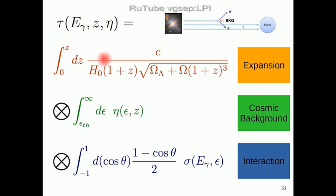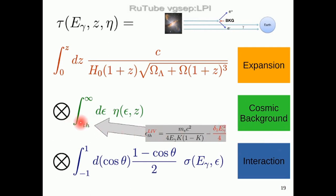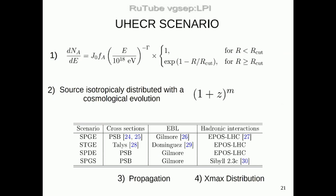Once this is done, you can calculate the propagation either analytically for the simplest case, or using a Monte Carlo simulation for the most complex one, giving you how transparent the universe is to a given interaction. Another example: how Lorentz invariance violation changes the pair production — there is an energy threshold, and when we include the violation for the first order, we gain an extra term inside the integral over the cosmic background where the interaction occurs.